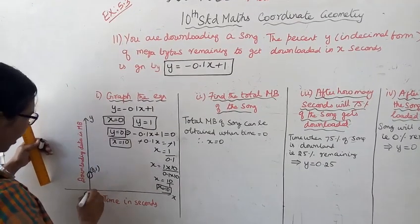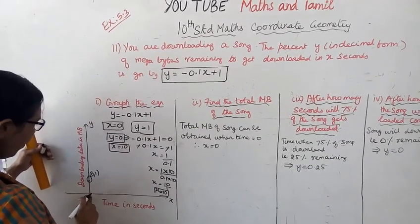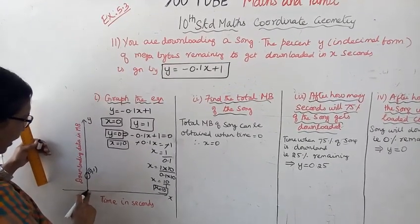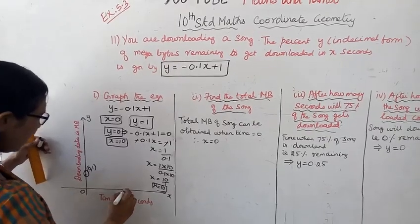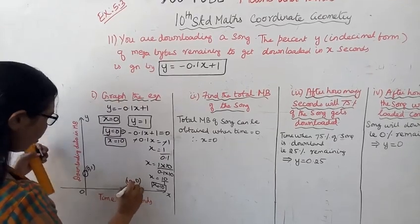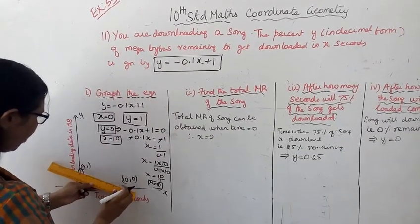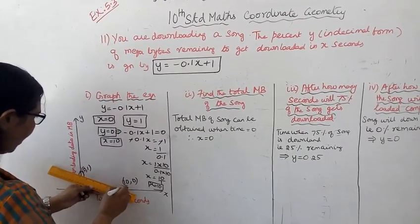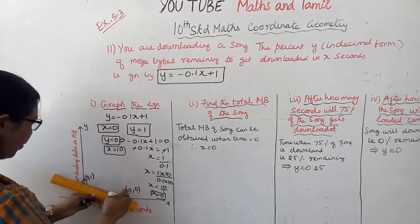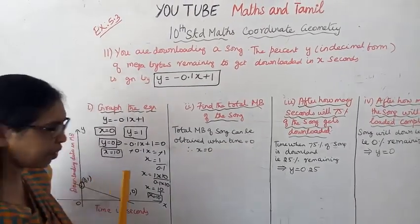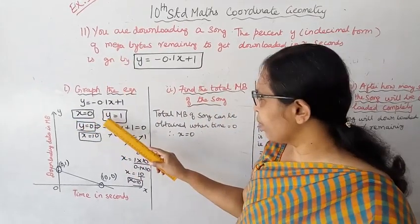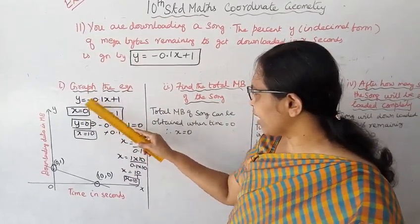So we get the two points: when x equals 0, y equals 1; and when x equals 10, y equals 0. For the graph, the first point is (0, 1) and the second point is (10, 0). This gives us the graph of the equation.